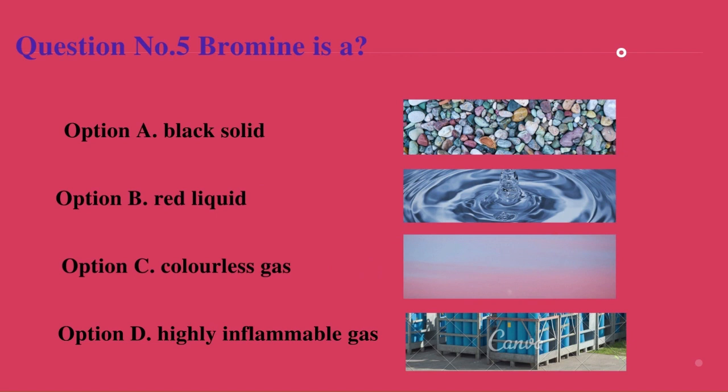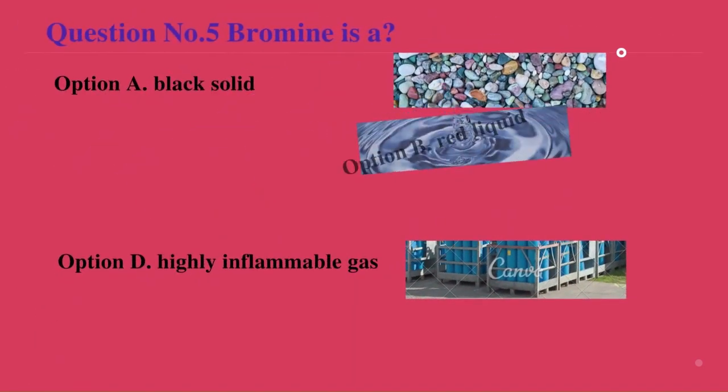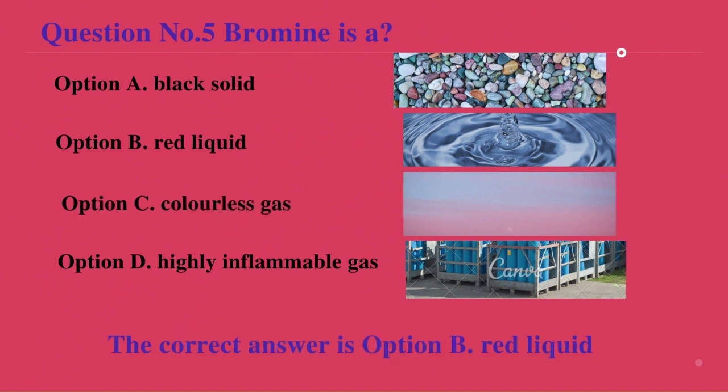Question number 5. Bromine is? A. Black solid. B. Red liquid. C. Colorless gas. D. Highly inflammable gas. The correct answer is option B. Red liquid.